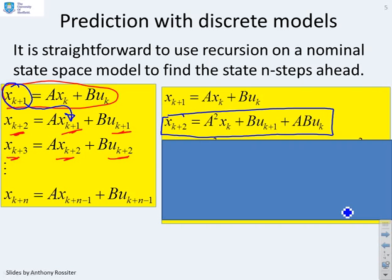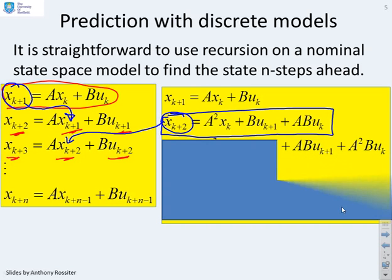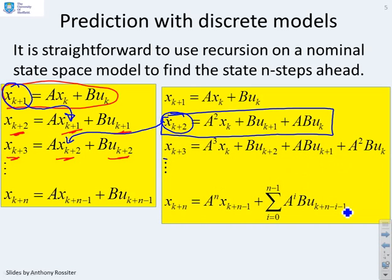Now I'm going to take this prediction for xk plus 2 and put it in here. When I do that, you find I get xk plus 3 equals a cubed xk plus buk plus 2 plus abuk plus 1 plus a squared buk, and so on.